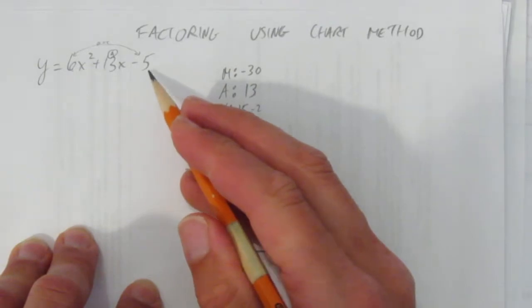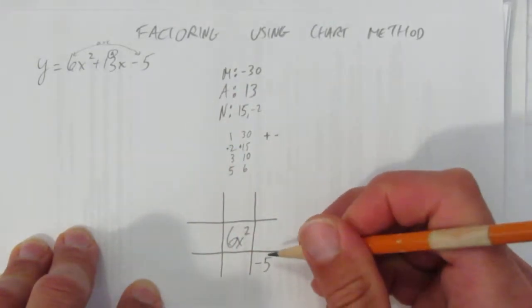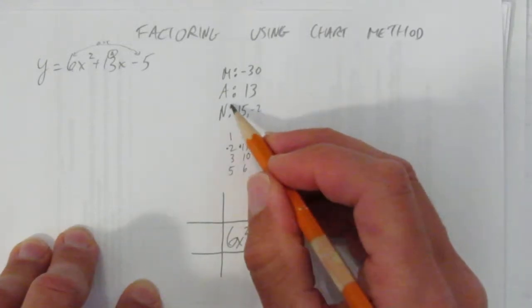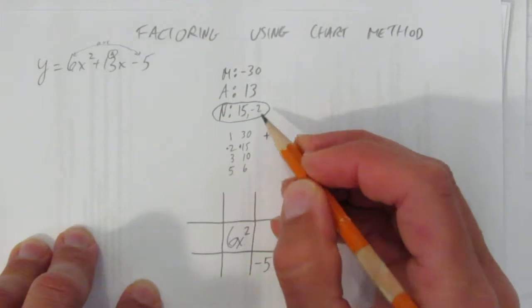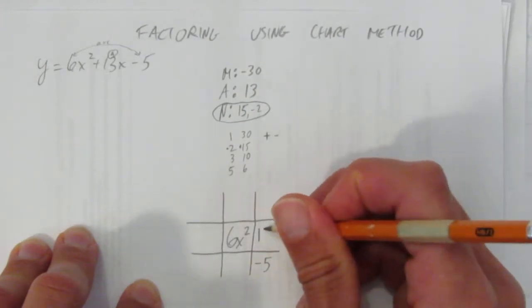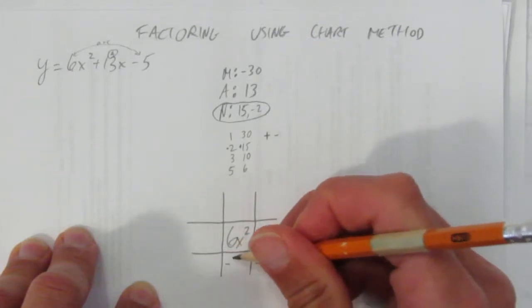Always the c term, the constant term, goes in the bottom right corner. And then finally, this work we did to get these n numbers, the 15 and the negative 2, they go in the right middle, 15x, and the bottom middle, negative 2x.